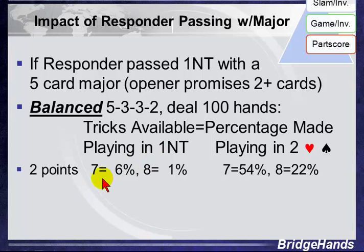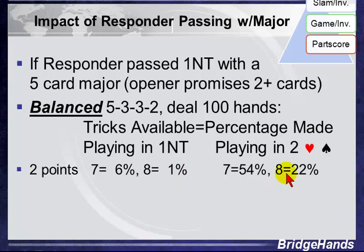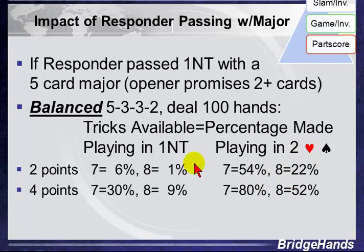With only two points, playing one no trump yields seven tricks just 6% of the time. But playing in two hearts or two spades, that rises to 54% — a clear advantage. The chance of making eight tricks is 1% in no trump versus 22% in two of a major. Increasing to four points: making seven tricks in no trump is 30%, versus 80% in two of a major. The chance of making eight tricks reaches 9%, and we hit the 50% threshold for making our two-level major contract.